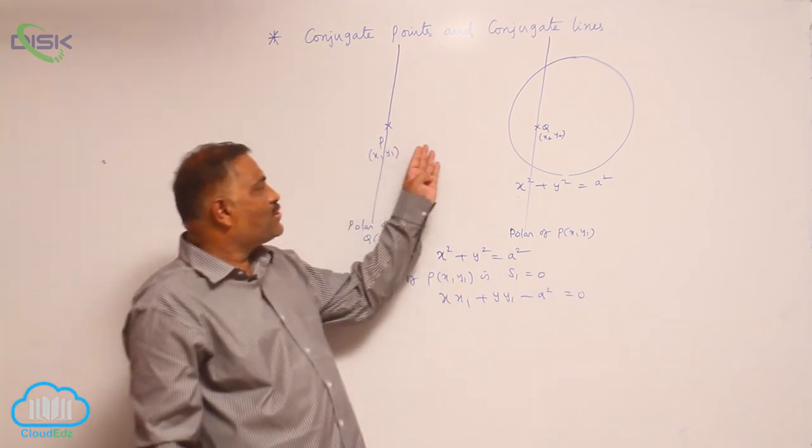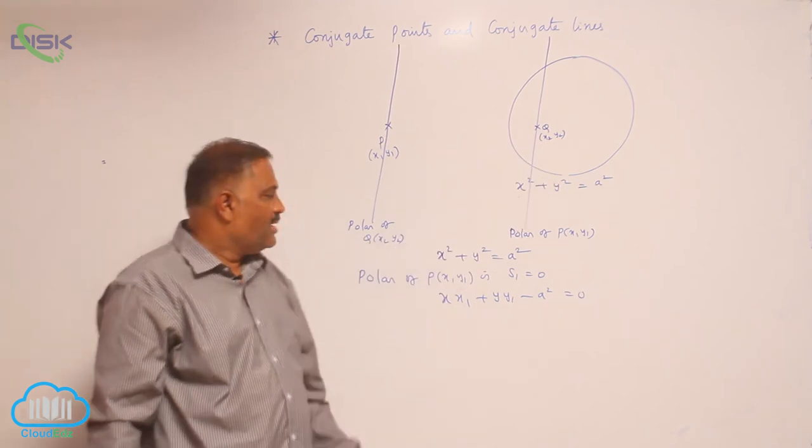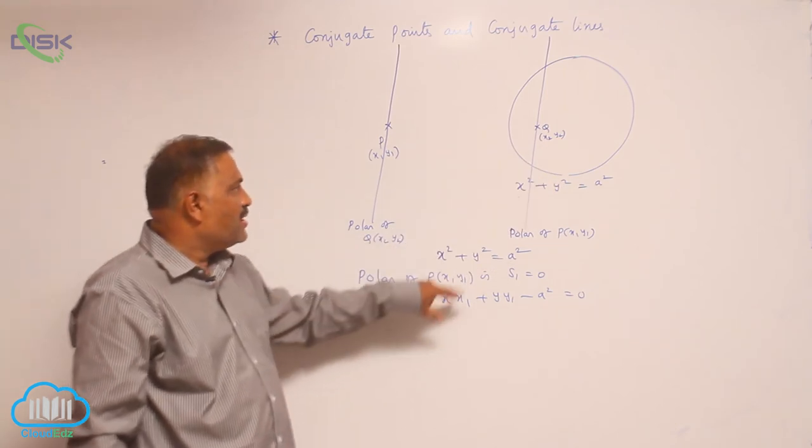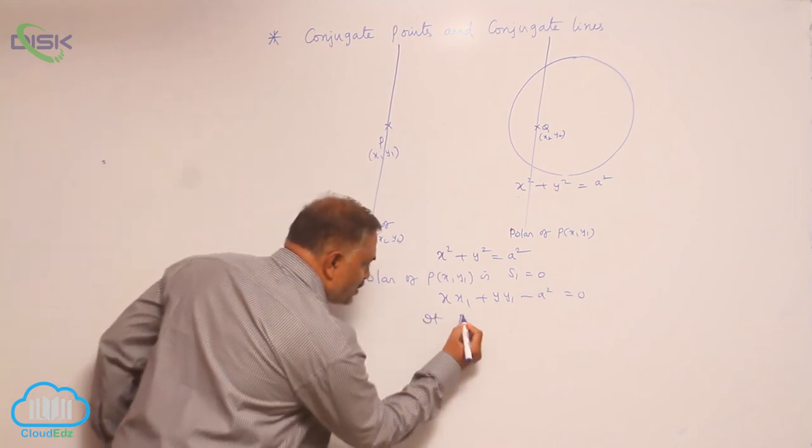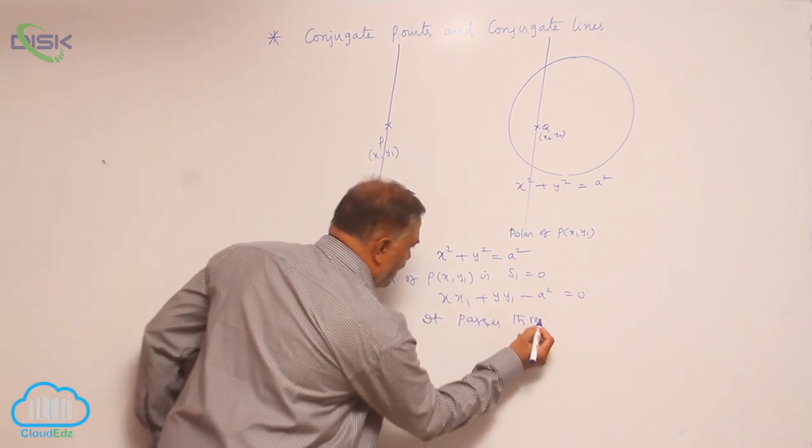Now, since these two points are conjugate points, this polar equation passes through q x2 y2.